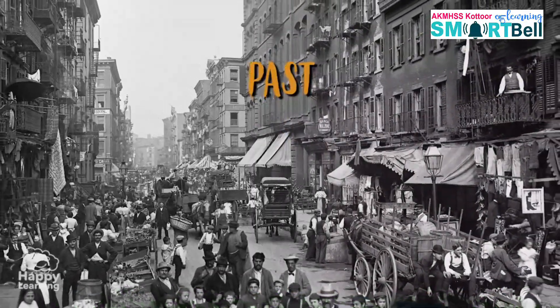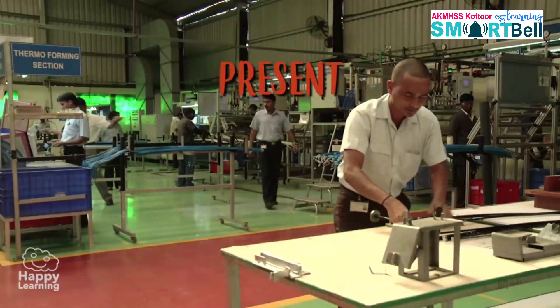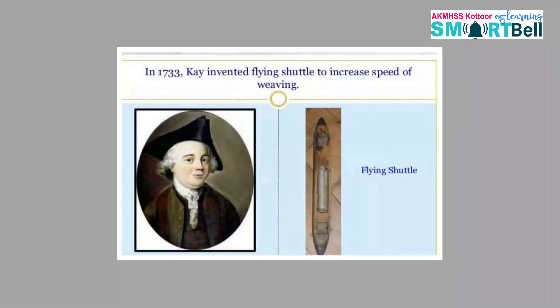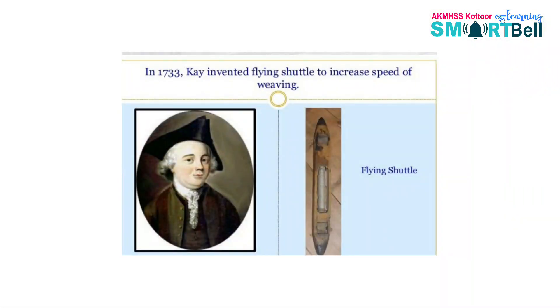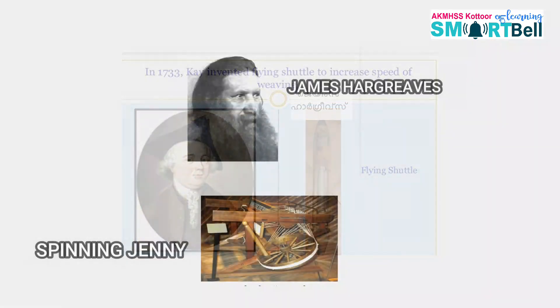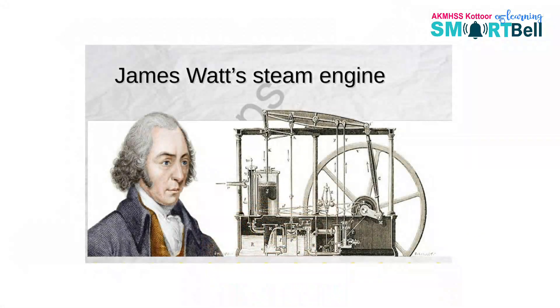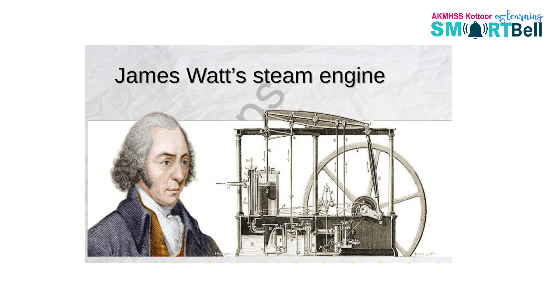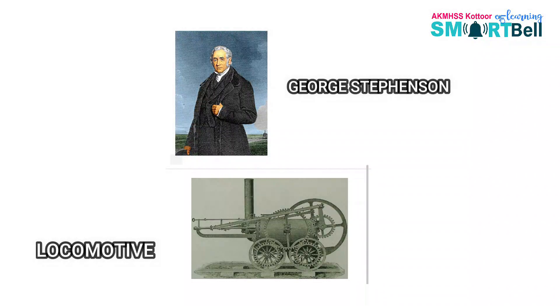Let's check the inventions during the period of the Industrial Revolution and the scientists' names. Flying Shuttle — invented by John Kay. Spinning Jenny — invented by James Hargreaves. Steam Engine — invented by James Watt. Locomotive — invented by George Stephenson.